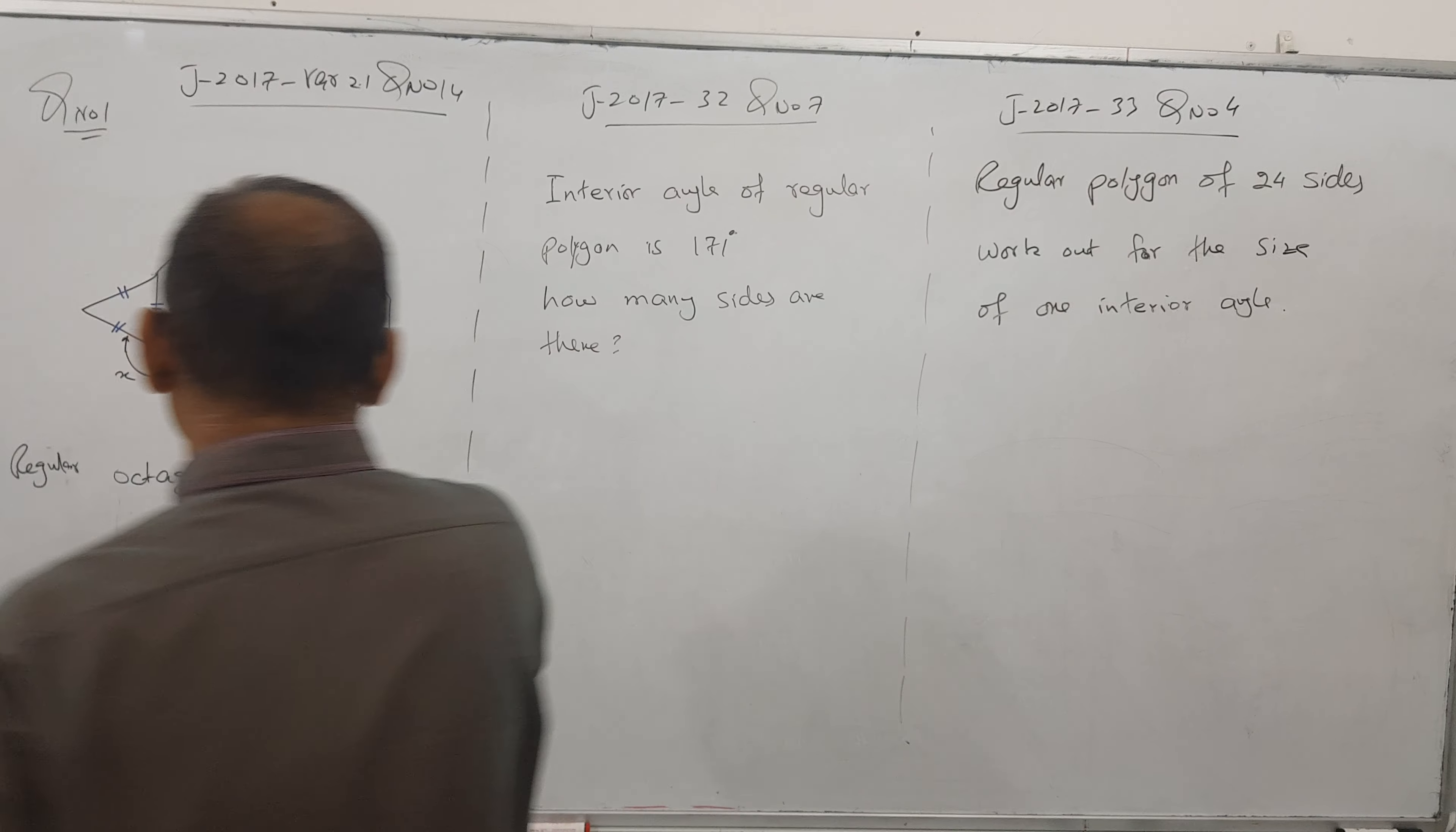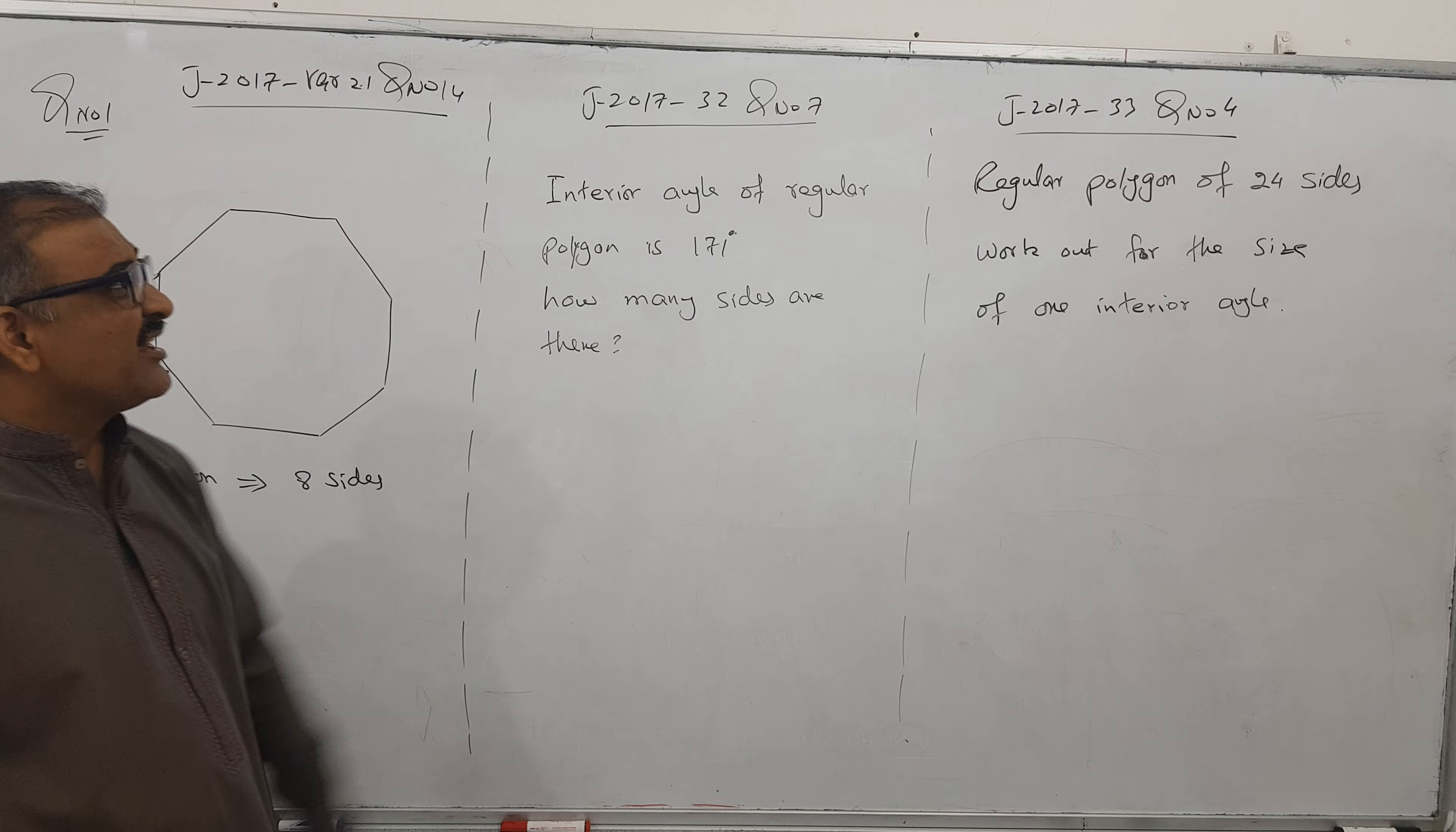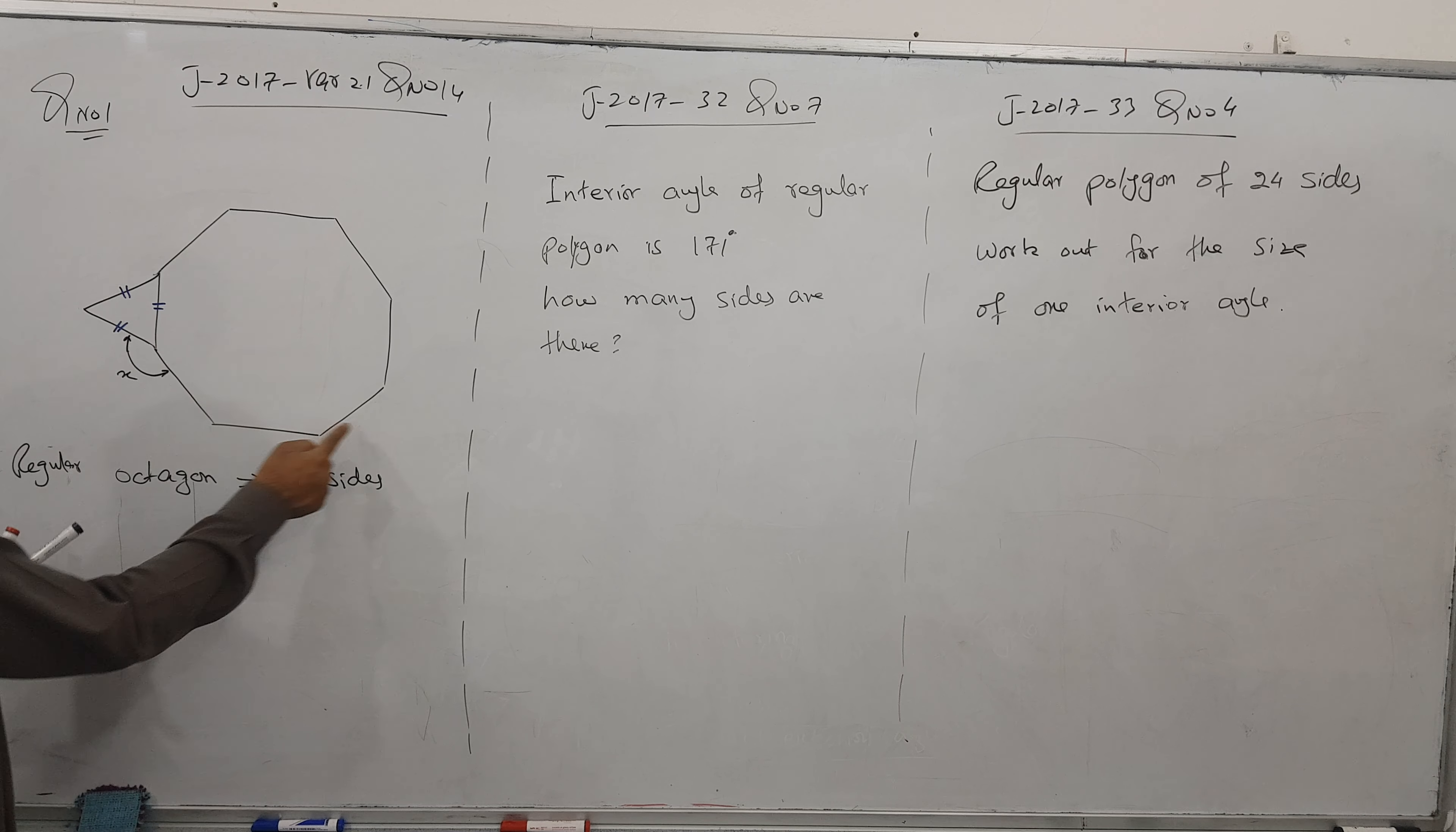Okay, we have three questions here: June 2017 variant 32, variant 33, and 2023 variant 33. Three questions on the polygon topic. Let's see what the deal is. Regular octagon - octagon means eight sides. One, two, three, four, five, six, seven, and eight.